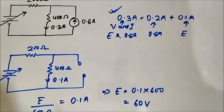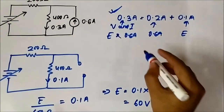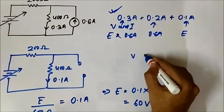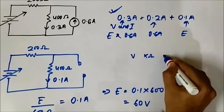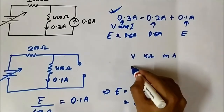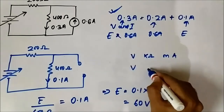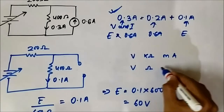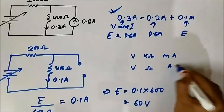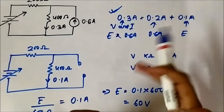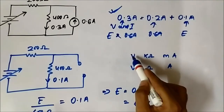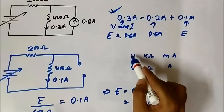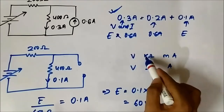An important point I have already discussed is about consistent unit forms: volt-kilo ohm-milliampere form or volt-ohm-ampere form. Always try to bring the circuit into one of these two forms.